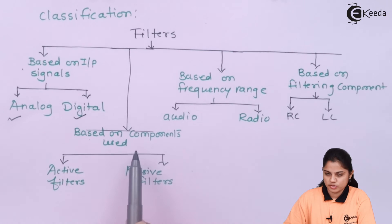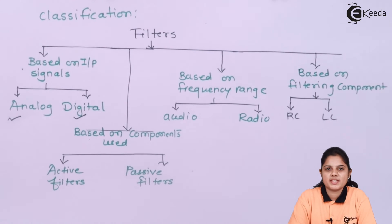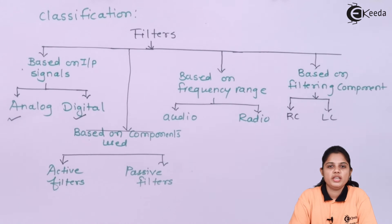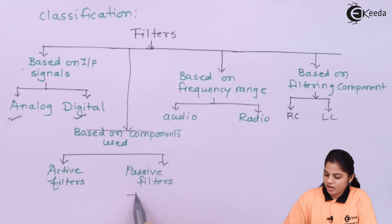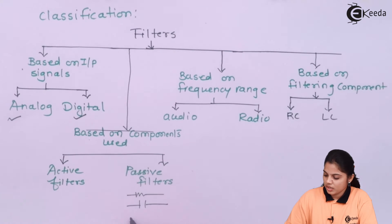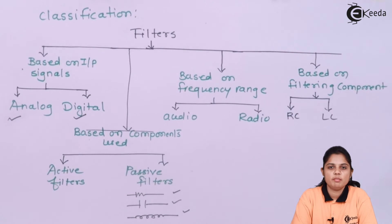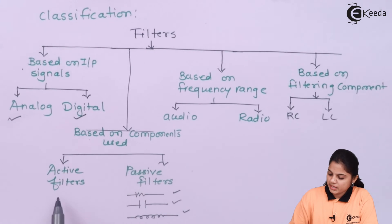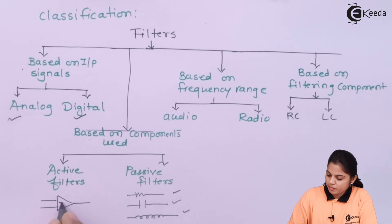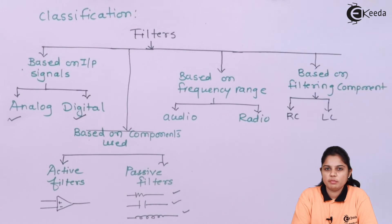Second, based on the components used — components can be active or passive. Passive means you do not need a supply voltage; active means you do need a supply voltage to get the output. For example, resistors, capacitors, and inductors are passive components, so a filter using these is a passive filter. If you are using an op-amp, which is an active device, then the filter is an active filter.